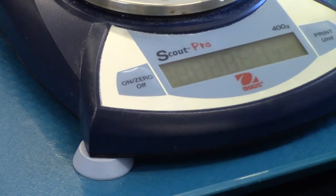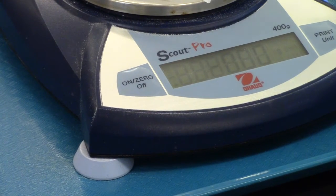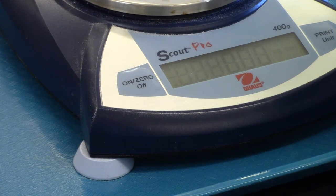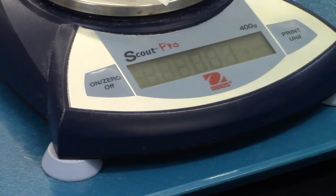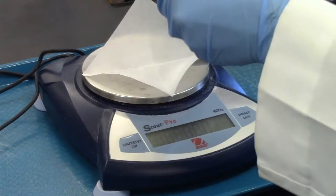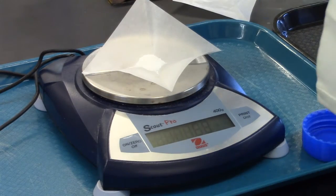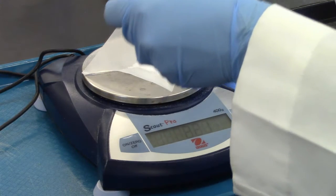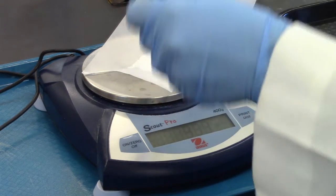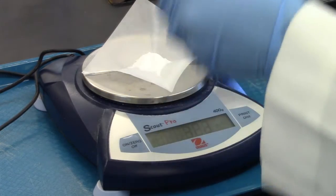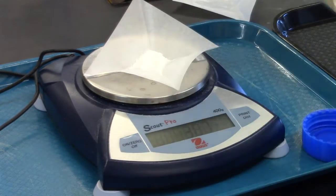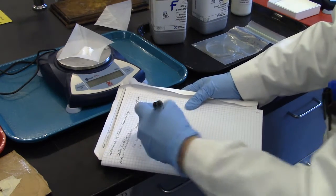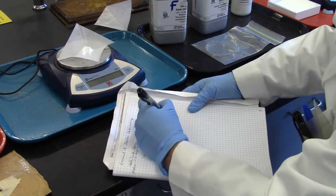The weighing paper has been placed on the balance. Now she will tare out the weighing paper, setting the balance back to zero. This way she can get the three grams of sodium thiosulfate anhydrous that she will need for the experiment. Record the mass into the notebook.